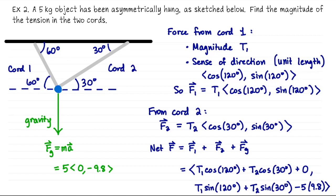I'm going to need more room, so I'm going to end up erasing most of this. But the idea from here is that this object is hanging at rest. So the net force acting on this object should be the zero vector. Everything is in equilibrium. So that means that whatever T1 and T2 are, it has to be the case that T1 cosine 120 plus T2 cosine 30 is zero. And the same story for the second component. Whatever T1 and T2 are, we need T1 sine 120 plus T2 sine 30 minus 5 times 9.8 to give us zero.